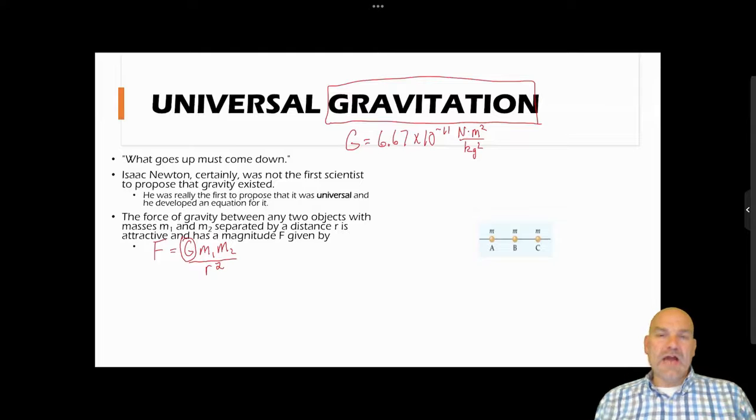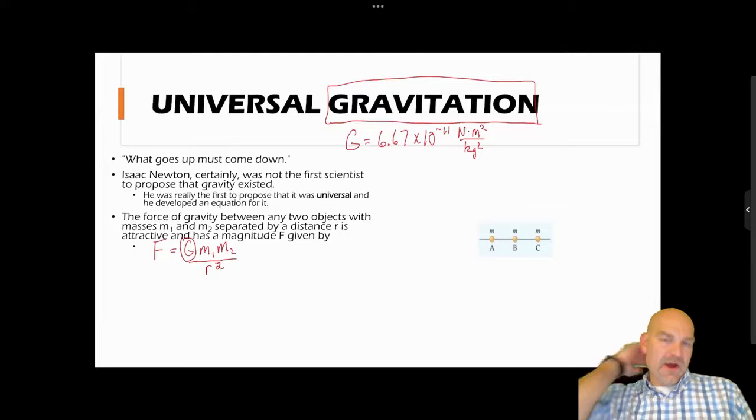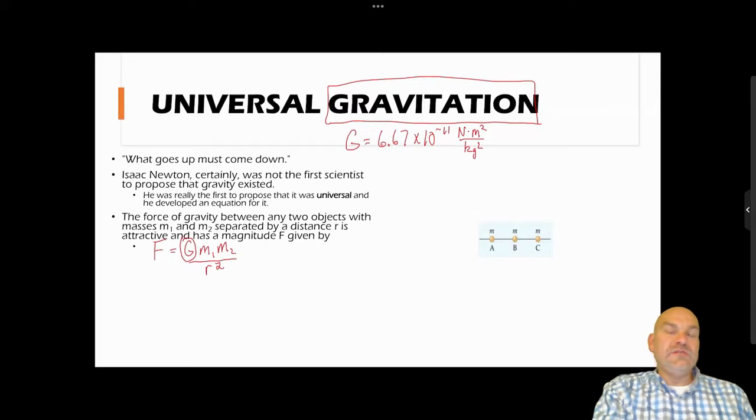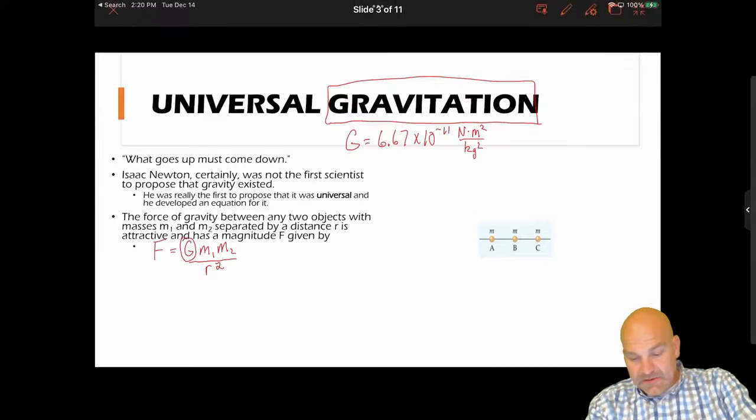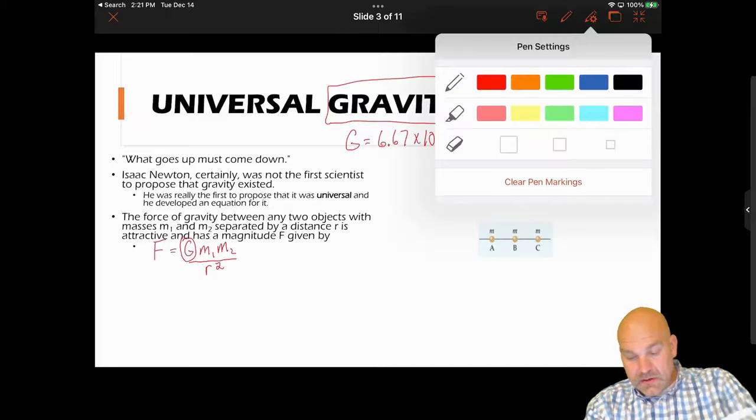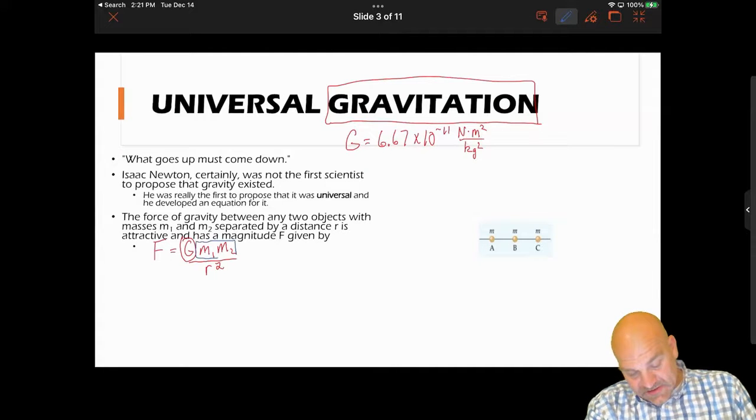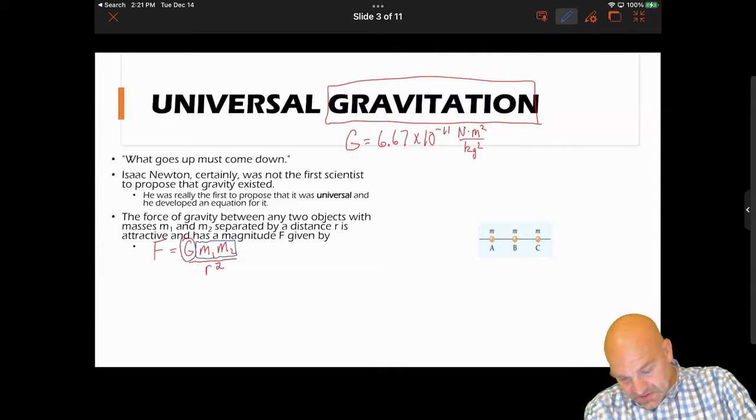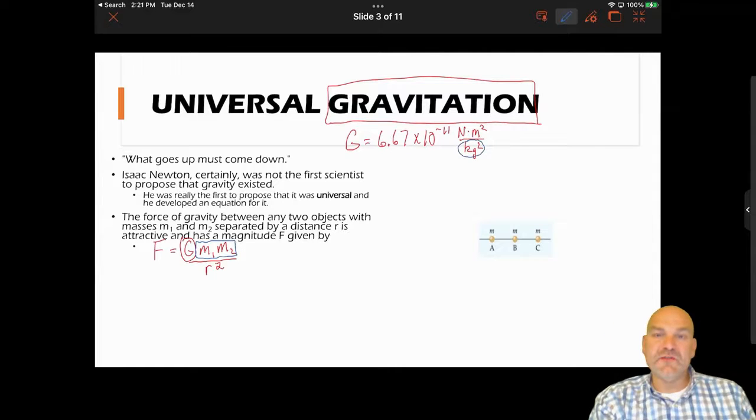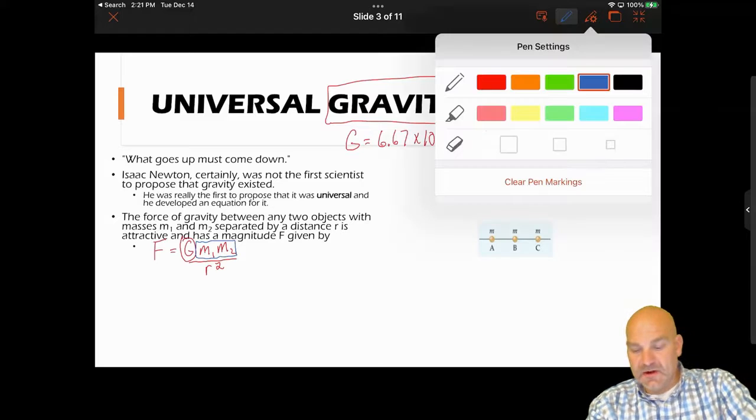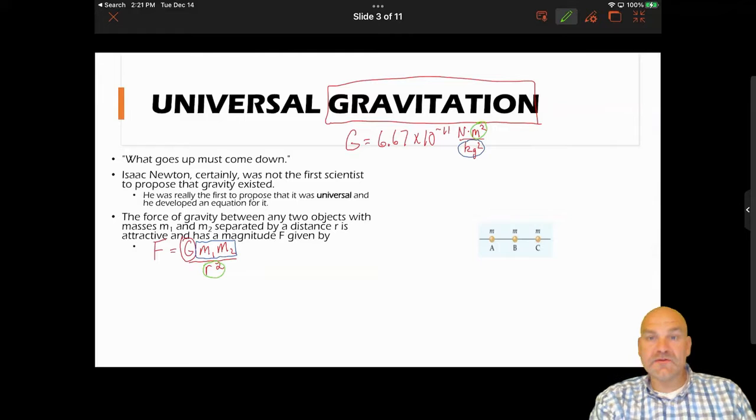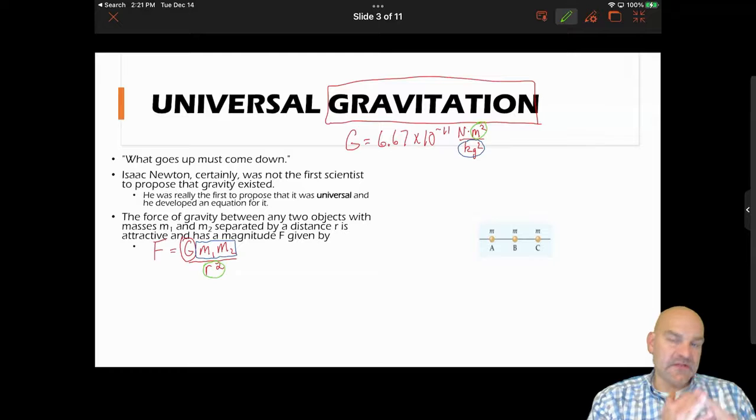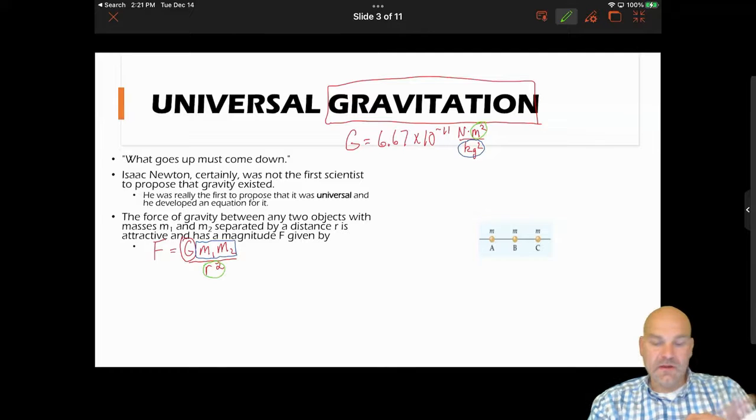The way to think about it is that we know G has to have these units because, let's see, I have mass times mass, that's why. If I know that my answer is going to be a force, I need that to cancel out. So there's my kilogram squared, but then I also have r squared that matches up to m squared to cancel that out. So you do have to note that your mass has to be in kilograms and then your distance has to be given in meters, because that's the unit for G.